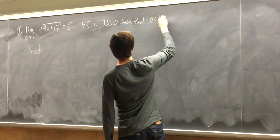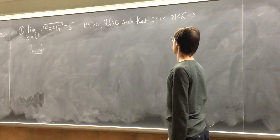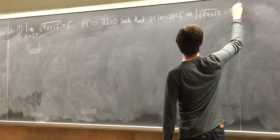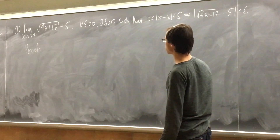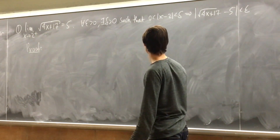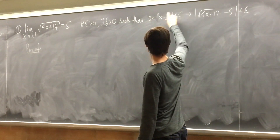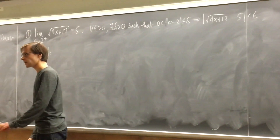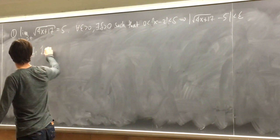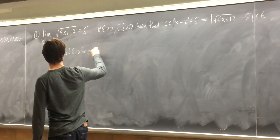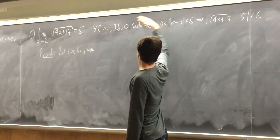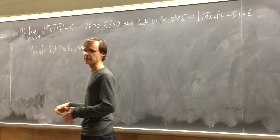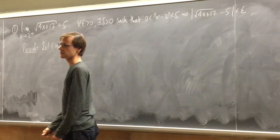Whenever zero is less than x minus 2 in absolute values, we have that f(x) — in this case, the square root of 4x + 17 — minus 5 is less than epsilon. Now, because our limit is taken from the right side, we will need to modify the definition a little bit: we won't have these absolute values here. This is what we want to show is true.